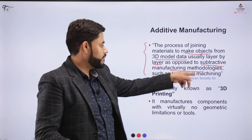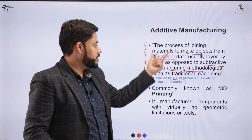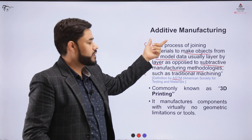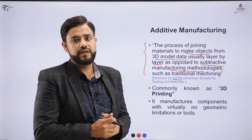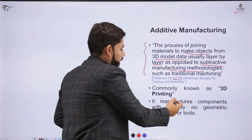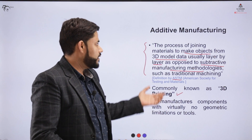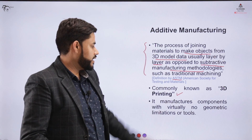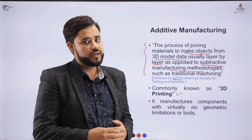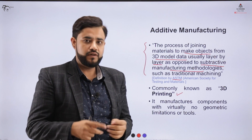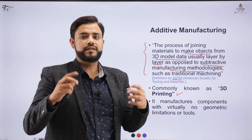In additive manufacturing, material is added layer by layer so that a 3D object is produced. Commonly, additive manufacturing is known as 3D printing. We can print 3D objects with the help of a 3D printer. The basic concept is that the machine produces components in layers and those layers are added so as to produce the entire 3D object.